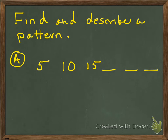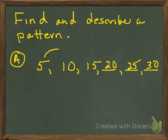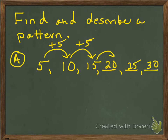In this section, we're going to find and describe a pattern. I've given you a pattern: 5, 10, 15. What do you think the next three numbers would be? You're going to use a rule and write the numbers in the pattern. 20, 25, and 30 would be the next three numbers. The rule? Moving from 5 to 10, I added 5. From 10 to 15, I added 5. From 15 to 20, I added 5. So the rule is to add 5.